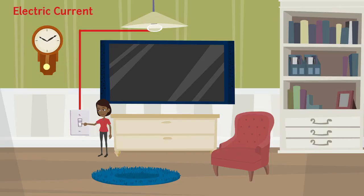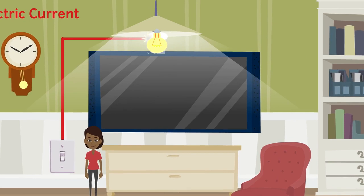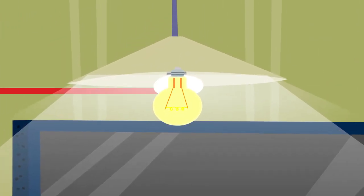When the button is switched on, the electric bulb glows and there is light everywhere in the room. It is because current flows through the circuit, causing heating of the filament, and the heated filament emits light.